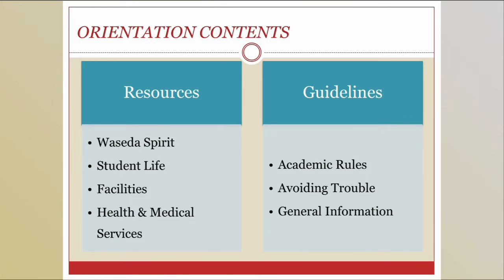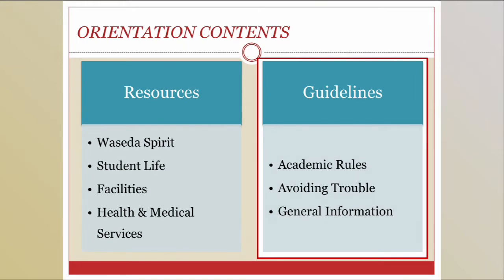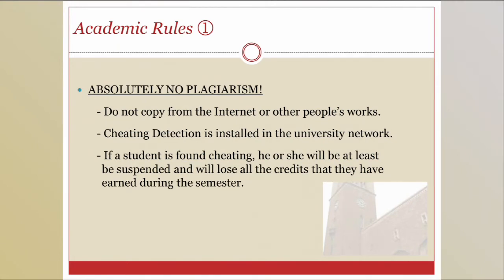I will now talk about the guidelines and rules you should follow both on and off campus. Rule number one: absolutely no plagiarism. In the university, the most fundamental rule and the highest value is academic honesty. For example, if you are required to write a book review, you are not allowed to copy sentences from reviews on sites like Amazon — even a few lines is totally unacceptable. Professors can use cheating detection software provided by the university, so never steal ideas and sentences from other people. As academics, we must pay respect to others' ideas and creations.